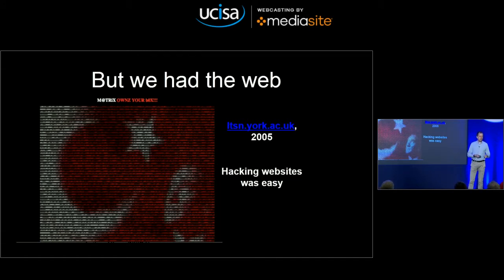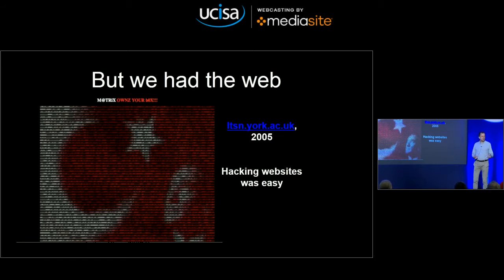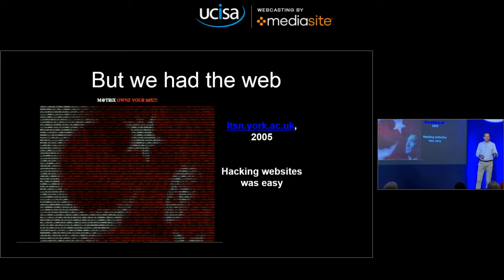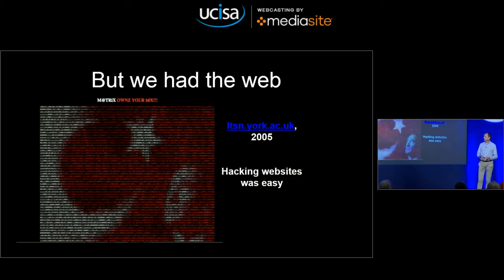The worms sort of died out. Operating systems got more secure, we all put in firewalls and antivirus. Websites were now being hacked — they were new, academics were putting them in, and they were all woefully insecure. A York website, ltsn.york.ac.uk in 2005, was hacked. The attackers broke in, replaced the homepage with an image of a face looking up at a Turkish flag, and moved on. You couldn't really monetize it. The odd person would ring up and say 'your website's been hacked — would you like some security consulting?' There was state-level espionage, but none of that really touched the university sector.